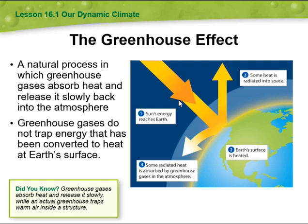As you can see from the figure, sun energy reaches the Earth, Earth's surface is heated, then some of the heat is radiated back into space, and some radiated heat is absorbed by greenhouse gases in the atmosphere.